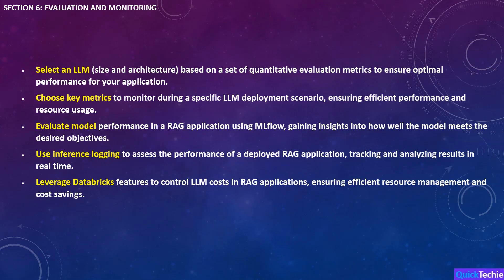In Section 6, we focus on evaluation and monitoring, essential for ensuring your AI applications perform well and remain cost-effective. You'll learn to select an LLM based on size and architecture using quantitative metrics, helping you choose the best model for your specific application. Next, you'll explore how to choose key metrics to monitor an LLM deployment, ensuring smooth and efficient performance in production environments. We'll also cover how to evaluate model performance in a RAG application using MLflow, use inference logging to track and analyze real-time outputs for continuous monitoring, and leverage Databricks features to manage costs in large language models, ensuring your applications are both effective and financially sustainable.